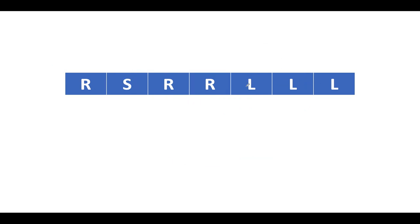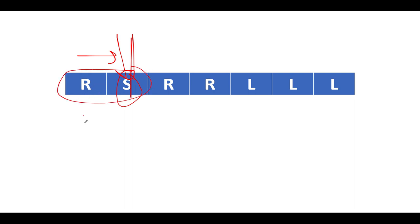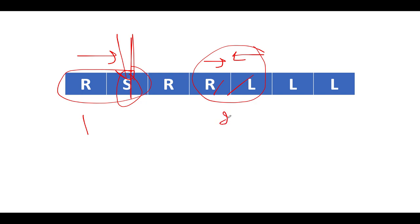Now comes an interesting case — hypothetically assume there's a stationary car in between. This right car will collide with the stationary one, giving a score of one unit. Then a right and a left car collide, contributing two units, so the score becomes three. Then a right car collides with a stationary object, updating the count to four.